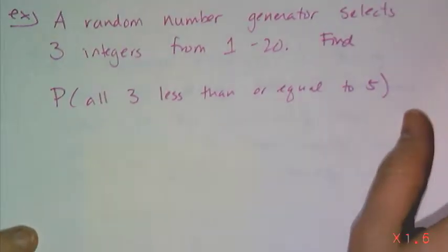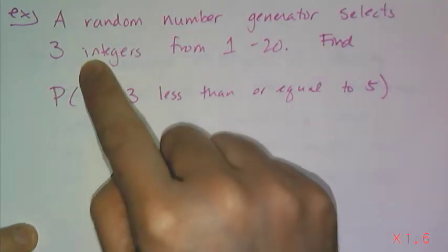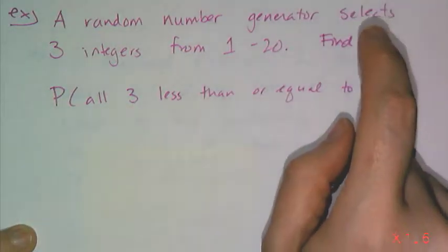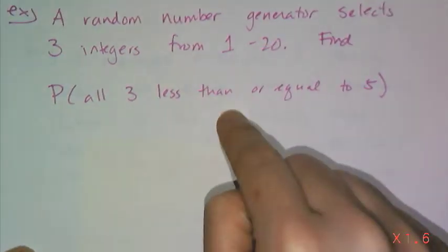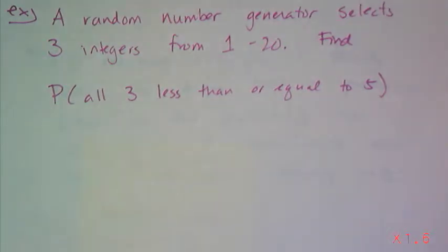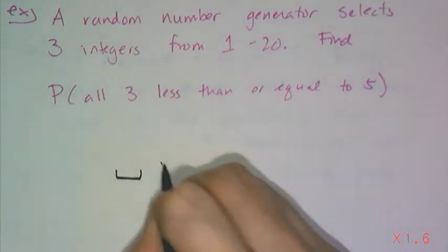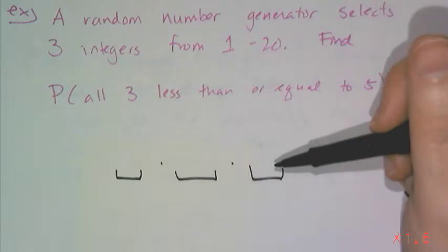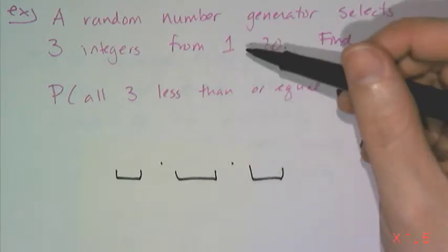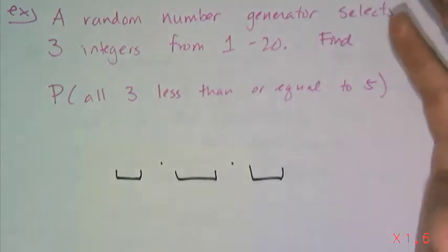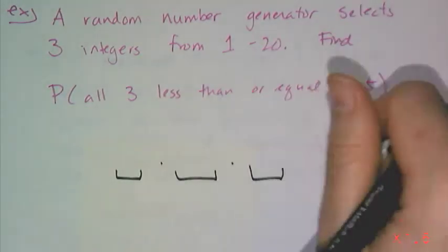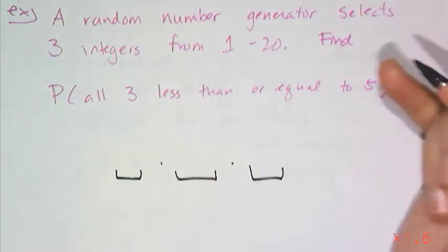We use that fact for examples like this. A random number generator selects three integers from one to twenty, and you need to find the probability that all three are less than or equal to five. Since it is a random number generator, I have three numbers that are going to be drawn, and I know I can just multiply the individual probabilities together because what the computer or random number generator shot out the first time has no impact on what it's going to shoot out the second time or the third time because it's random.